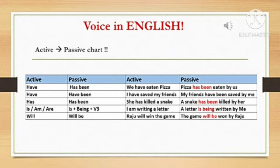See the next one — has. By using has in active, the passive form is has been. For example: She has killed a snake. By passive conversion: A snake has been killed by her.